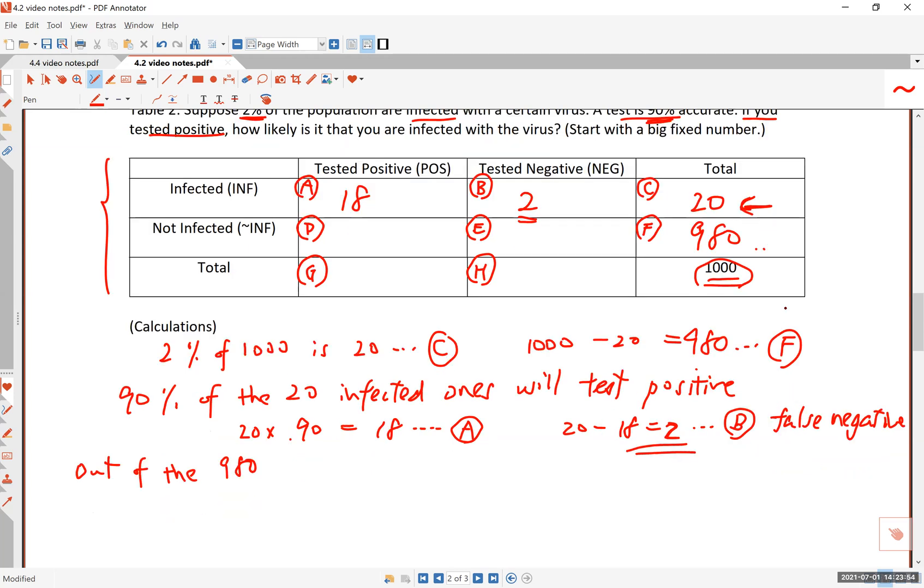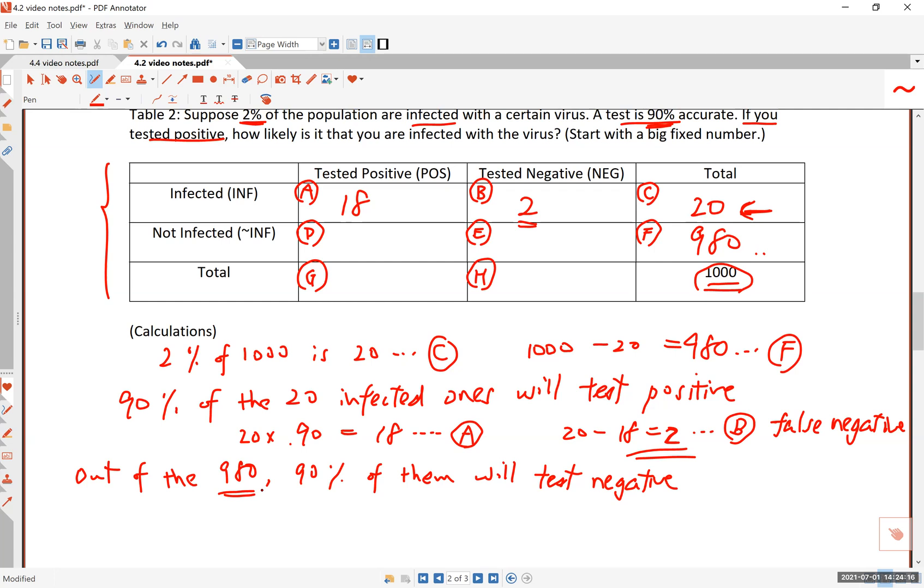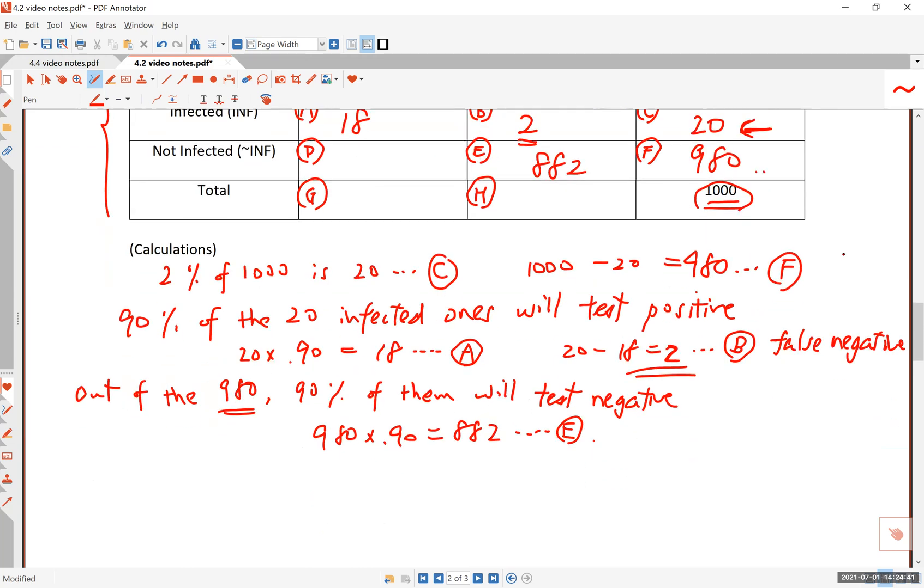Out of the 980 non-infected people, 90% of them will test negative. This is true because the test is 90% accurate, and we have 980 non-infected people, and 90% of them will correctly test negative. So 980 times 0.9 equals 882. These are the people who are not infected and test negative, so that's 882 in box E. The rest of them, 980 minus 882, is 98.